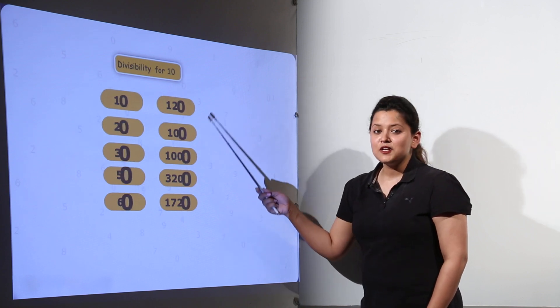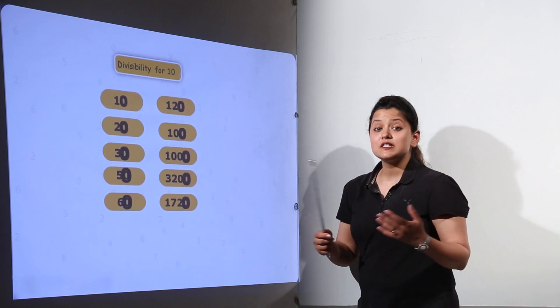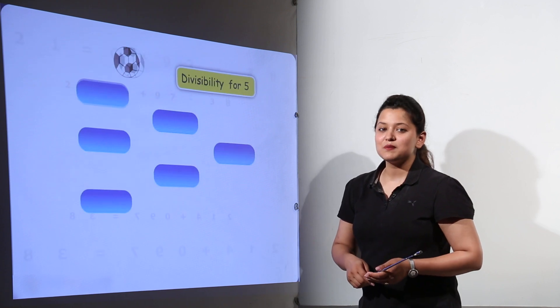For divisibility by 10, you just check the units place. If it is 0, then the number is divisible by 10.